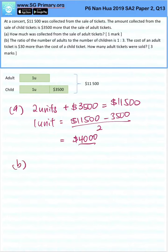Part B. The ratio of the number of adults to the number of children is 1 to 3. Adults to children, 1 is to 3. The cost of an adult ticket is $30 more than the cost of a child ticket. How many adult tickets were sold?